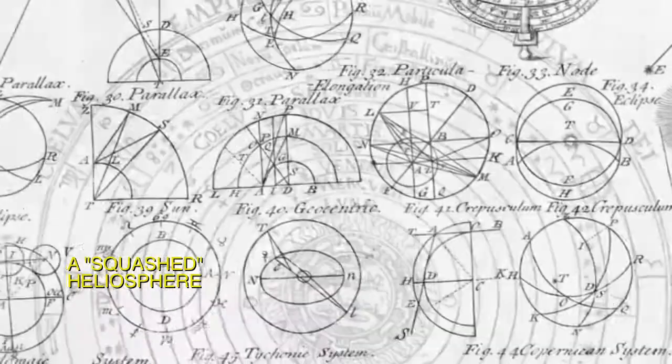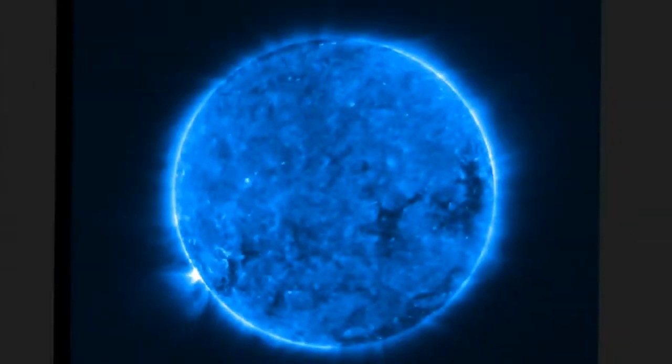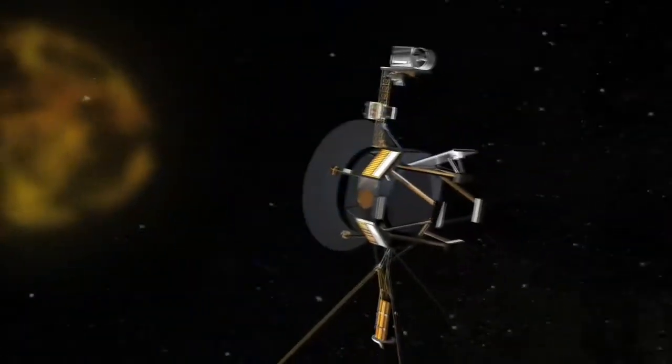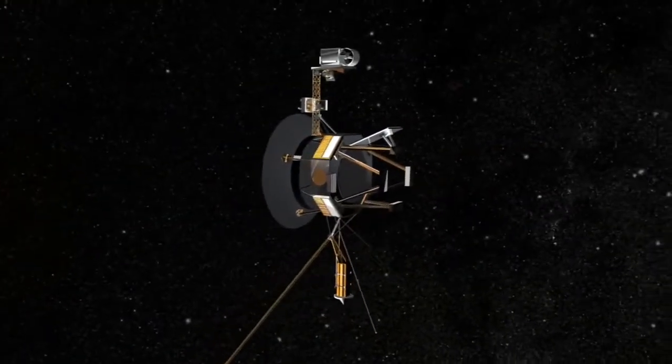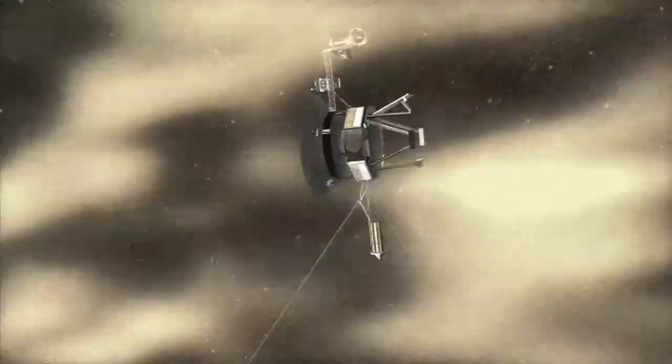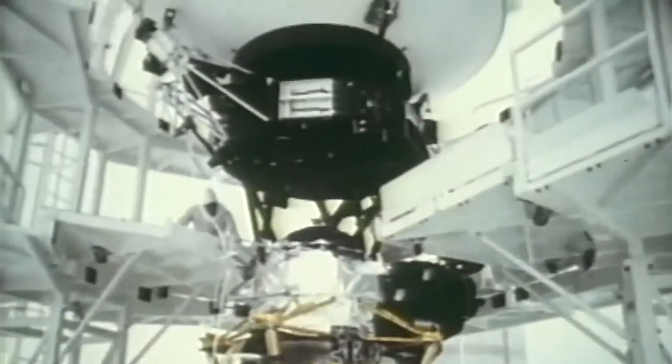Sometimes, a great discovery is a new perspective on the universe we thought we knew. As the Voyager spacecrafts near the edge of our Sun's reach, scientists are getting a new look at the expanse and shape of the solar system.